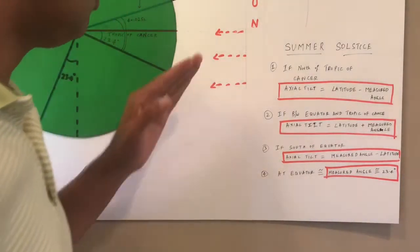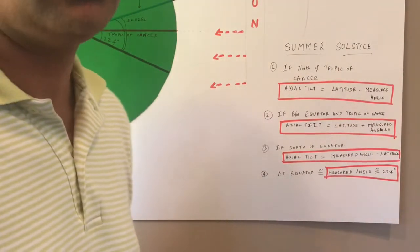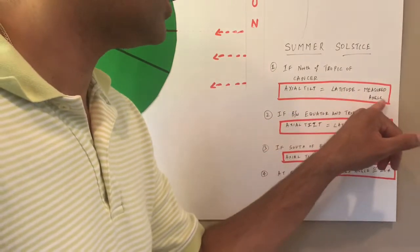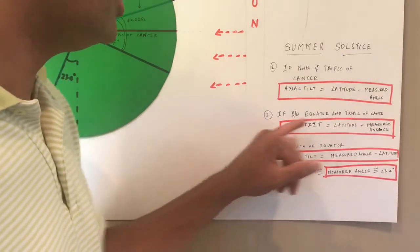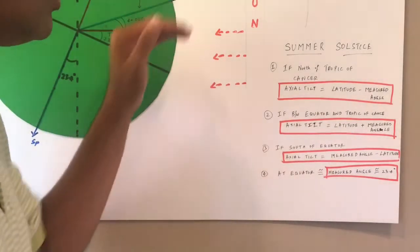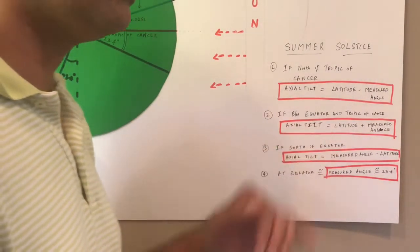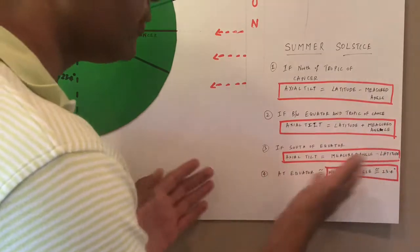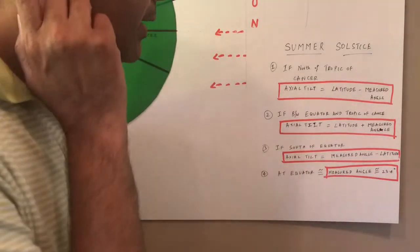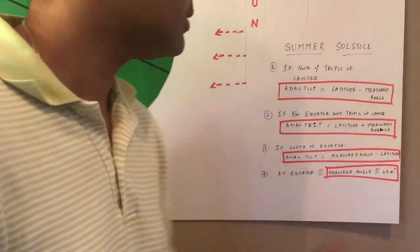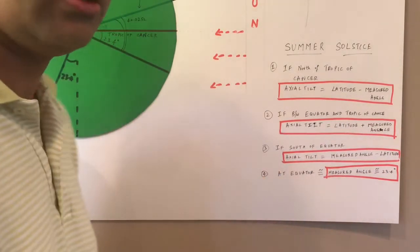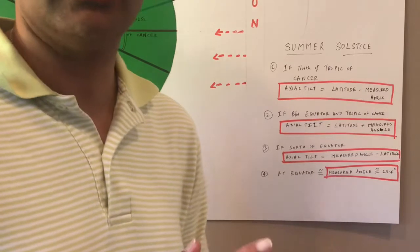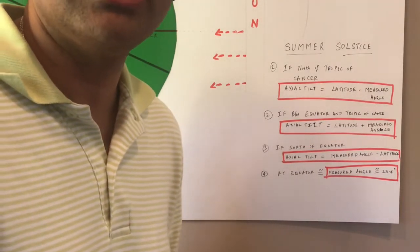If you are north of the Tropic of Cancer in the northern hemisphere, the axial tilt is given by your latitude minus the measured angle. If you are between the equator and the Tropic of Cancer, the axial tilt is given by the latitude plus the measured angle. If you are south of the equator, the axial tilt is given by the measured angle minus the latitude. If you are exactly at the equator, the measured angle should theoretically be very close to the axial tilt, which is 23.4 degrees.